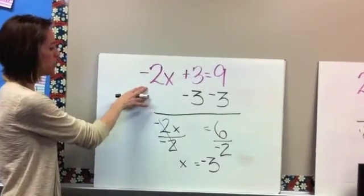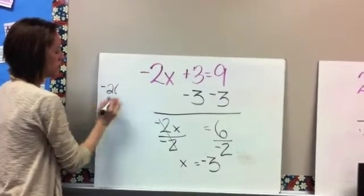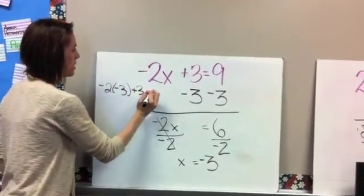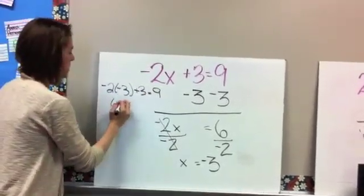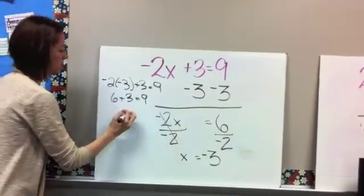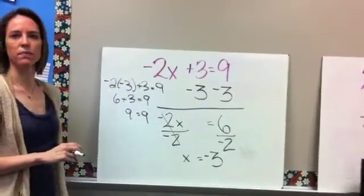So then we take it with this, and we would just plug it in to see if it works. So now we have negative 2 times negative 3 plus 3 equals 9. Negative 2 times negative 3 gives us a positive 6 plus 3 equals 9. And 6 plus 3 is 9. So we know that that one works.